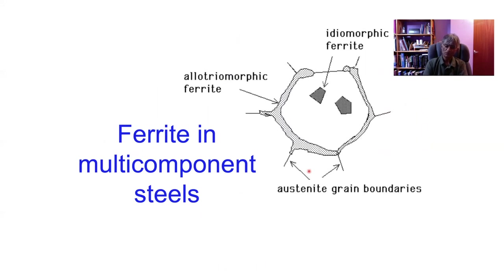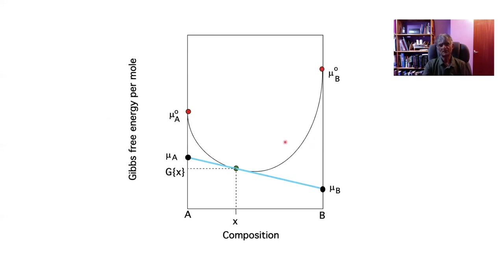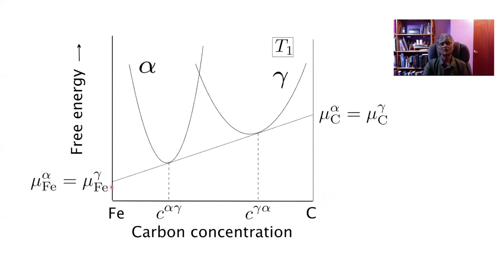In the binary case, we had an average carbon concentration c̄, and at a particular temperature we had a tie line defining the compositions at the interface assuming local equilibrium. Drawing a tangent to the free energy curve defines the chemical potentials of the species at a particular concentration, and the free energy is partitioned into a contribution due to A atoms and a contribution due to B atoms. When we have two phases in equilibrium, a common tangent defines the equilibrium compositions because it makes the chemical potentials of the species equal in both phases.